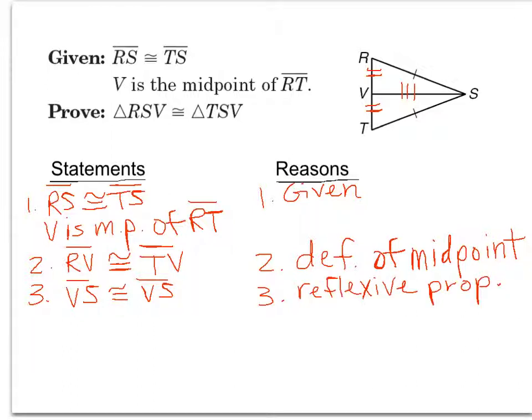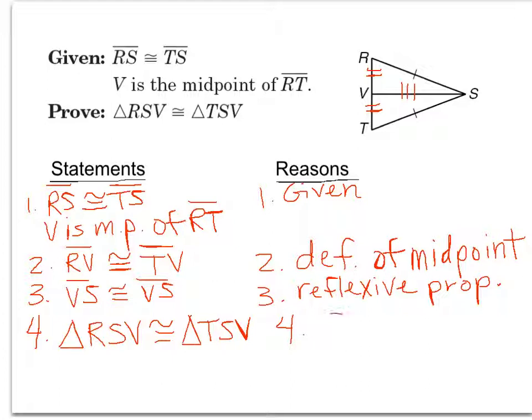Now looking at the picture, we are at the point where we have one of the triangle postulates — side, side, side — and that's enough information to prove that the two triangles are congruent. So we're ready to put the last line of the proof in. We can say that triangle RSV is congruent to triangle TSV because of SSS, and we're done.